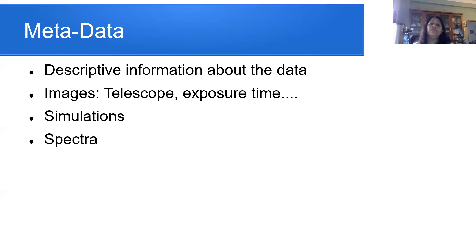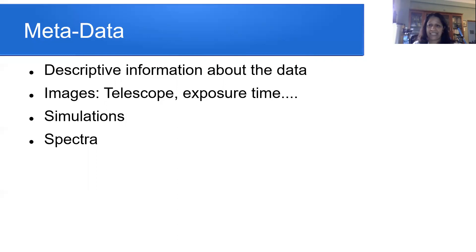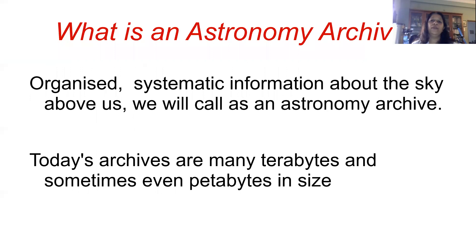Along with the data, you also have what is called metadata. Like the header in a FITS file, metadata is descriptive information about the data — for example, which telescopes were used, the exposure times, and various other things about the data. Metadata is data that supplements your data — it gives you data about the data, telling you how it was obtained and what is special about it.